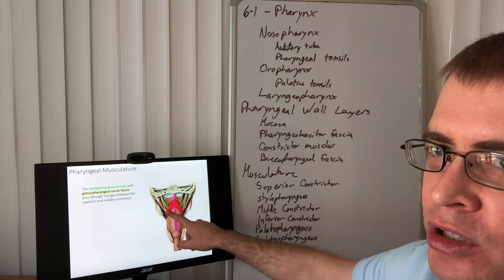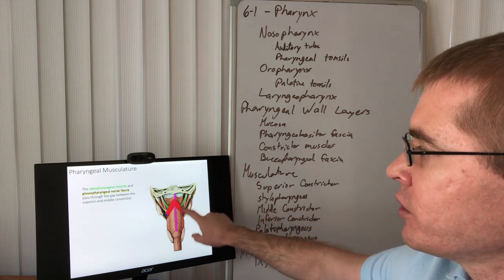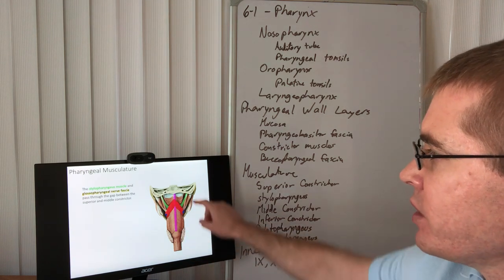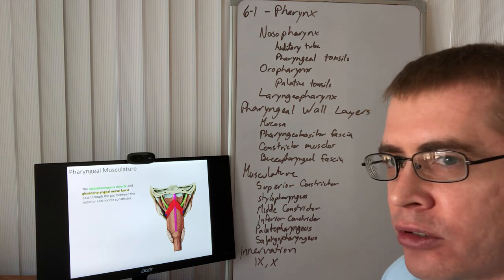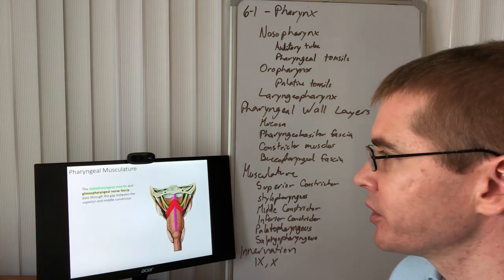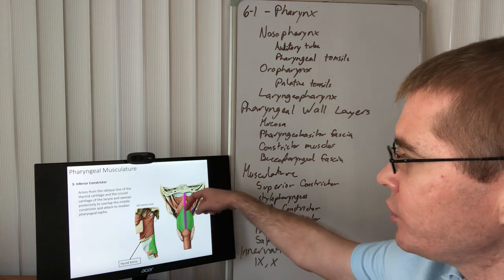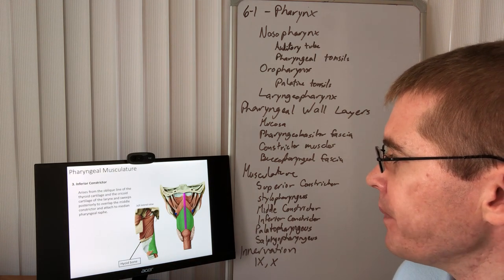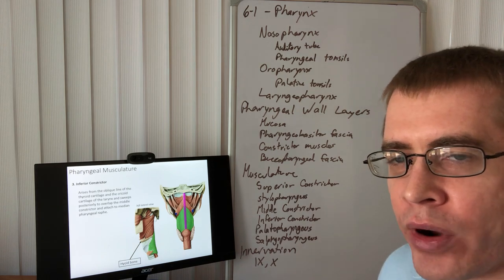Diving between the superior and middle constrictors is the stylopharyngeus muscle, shown here in green. We can see the superior constrictor, stylopharyngeus diving deep to the middle constrictor. On the posterior surface visible from this view is the glossopharyngeal nerve — the SVE fibers innervating stylopharyngeus and forming the pharyngeal plexus with the vagus nerve on the posterior surface of the constrictors. Moving on to the inferior constrictor, it travels obliquely and attaches to the thyroid cartilage as well as the cricoid cartilage. The key to identifying these constrictors is understanding the angle of the fibers and the landmarks where they begin and end.